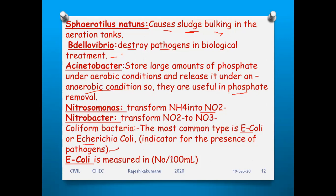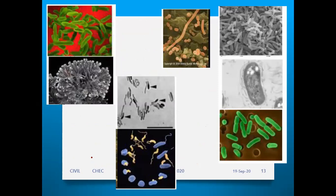E. coli is measured per 100 ml — the number of countable bacteria present in 100 ml of water is measured by this method. If you see the real microorganisms, the bacteria in the wastewater through a microscope, you can see the types present.